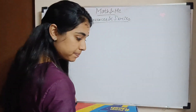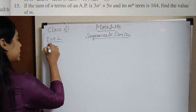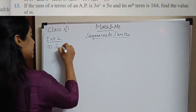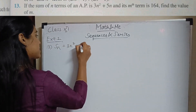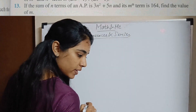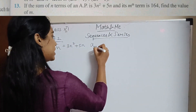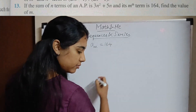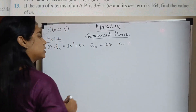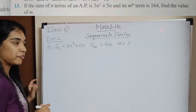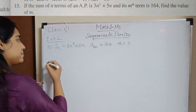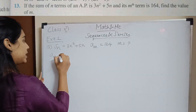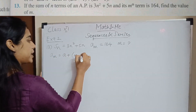Question number 13: the sum of n terms of an AP is 3n² + 5n, and its mth term am is 164. Find m. So you need to find the value of m. The formula for am is: am = a + (m − 1) × d.